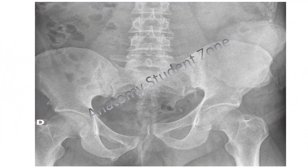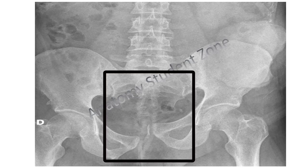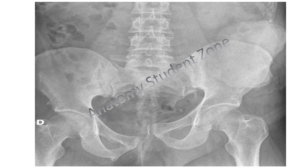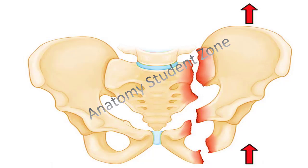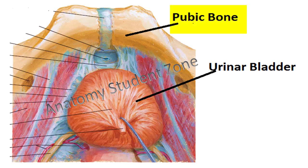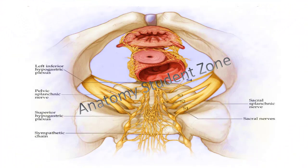Damage to these veins leads to massive hemorrhage, which can be life-threatening. In cases of vertical shear fracture, it can cause damage to the urogenital diaphragm, and the male urethra can be damaged. The urinary bladder can also be affected in pelvic injuries, especially when full, due to its location immediately behind the pubic bone. In sacral fractures, the rectum can tear, and nerve injuries around sacral spinal nerves result in persistent pain.